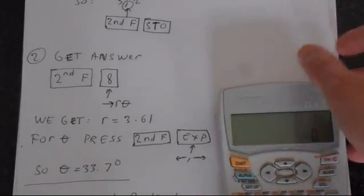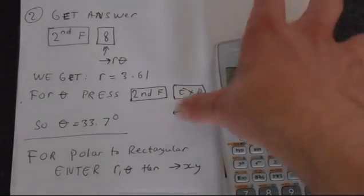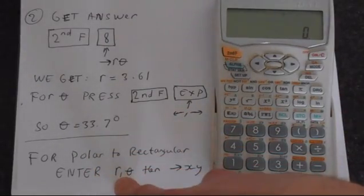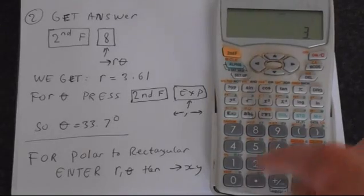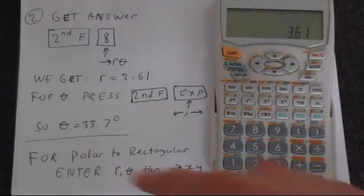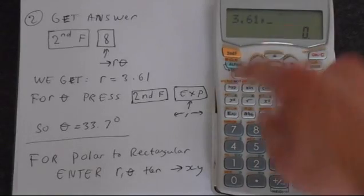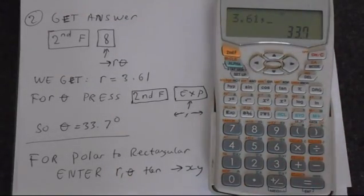Now let's look at how to do it the opposite way. Maybe you've got a number in polar form, and you want to get it in rectangular form. You do it in exactly the same way. So instead of entering X and Y, we put in R and theta. Let's do the same example. We've got 3.61 as our R value. Second function, STO for the comma. And then we're putting in theta, which is 33.7 degrees.